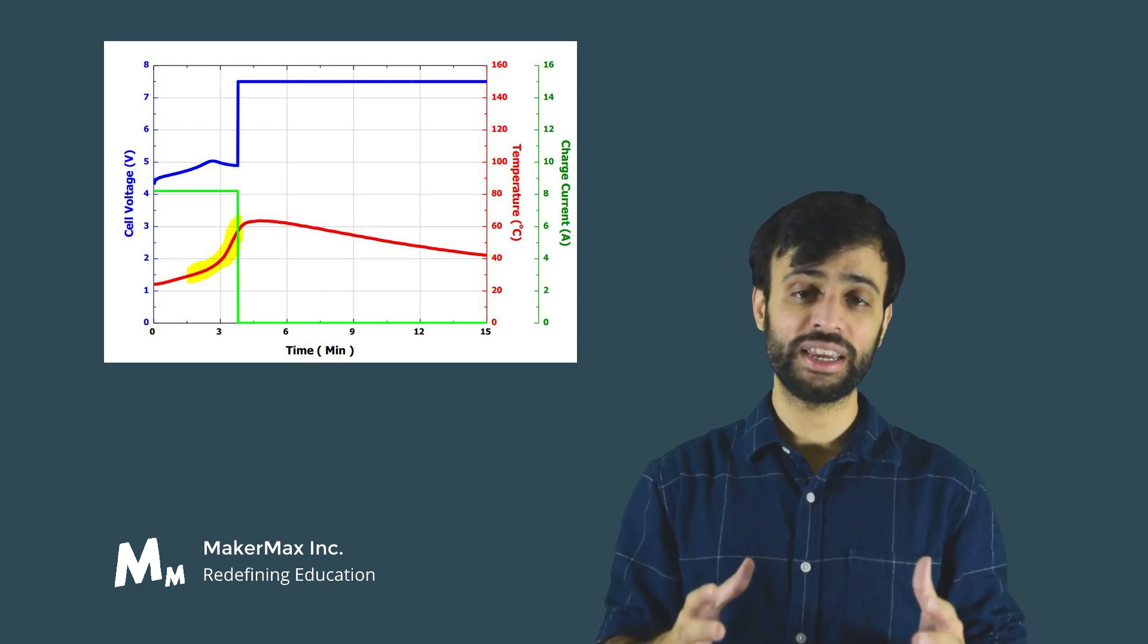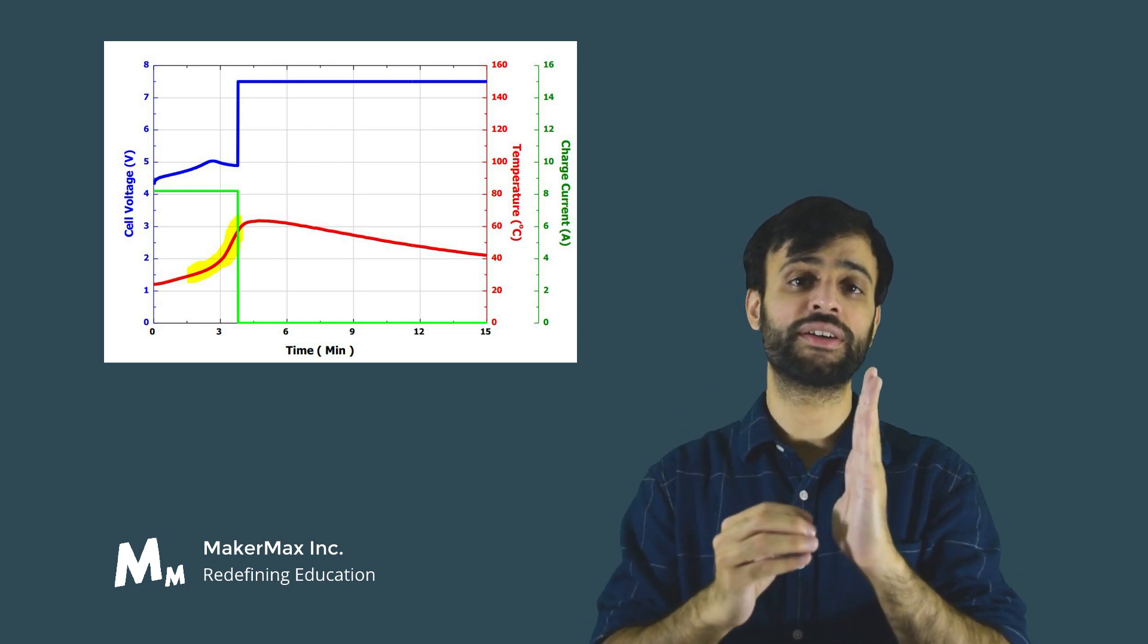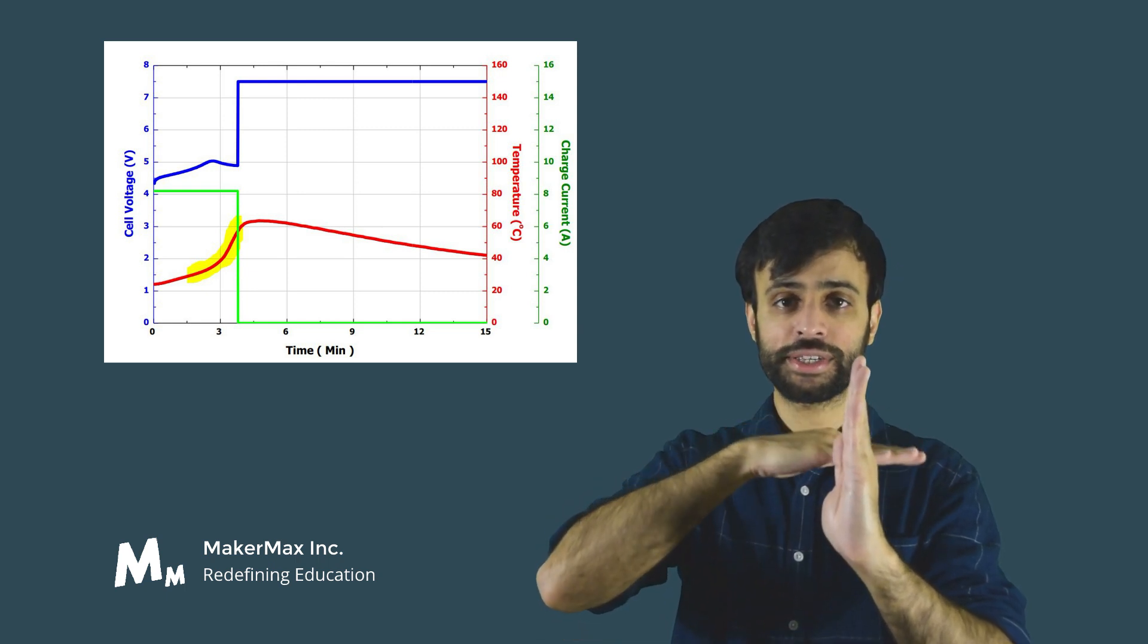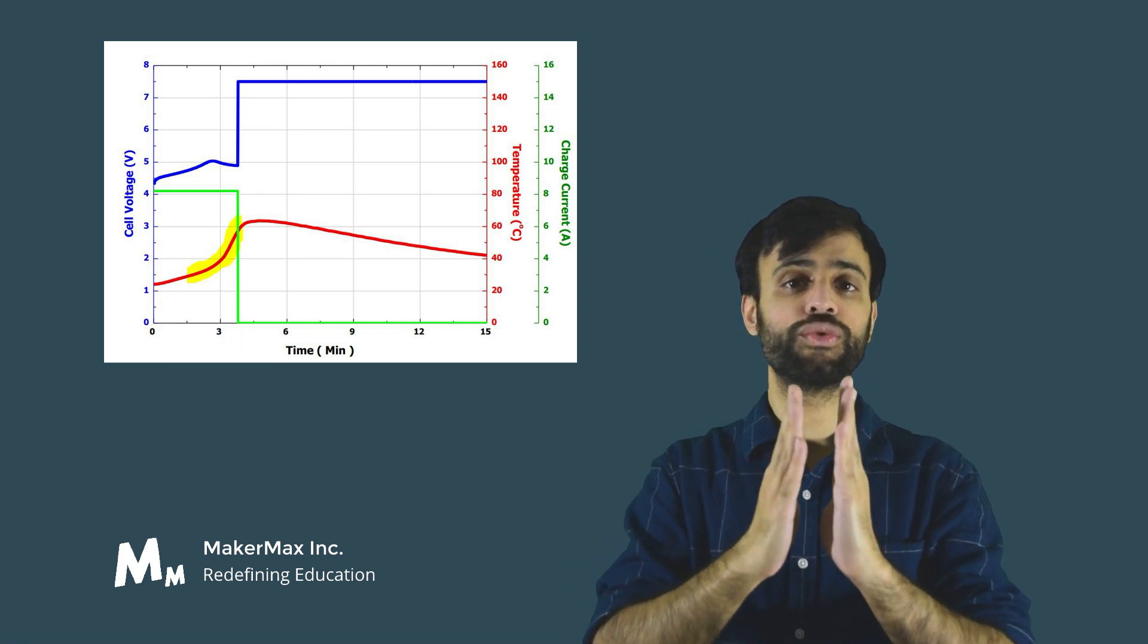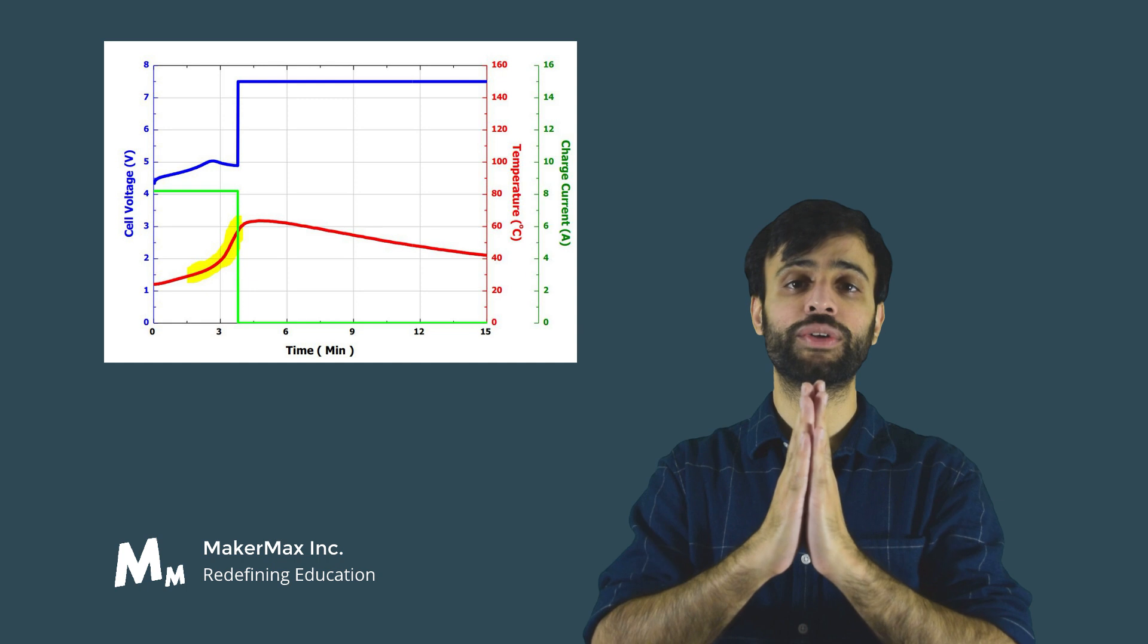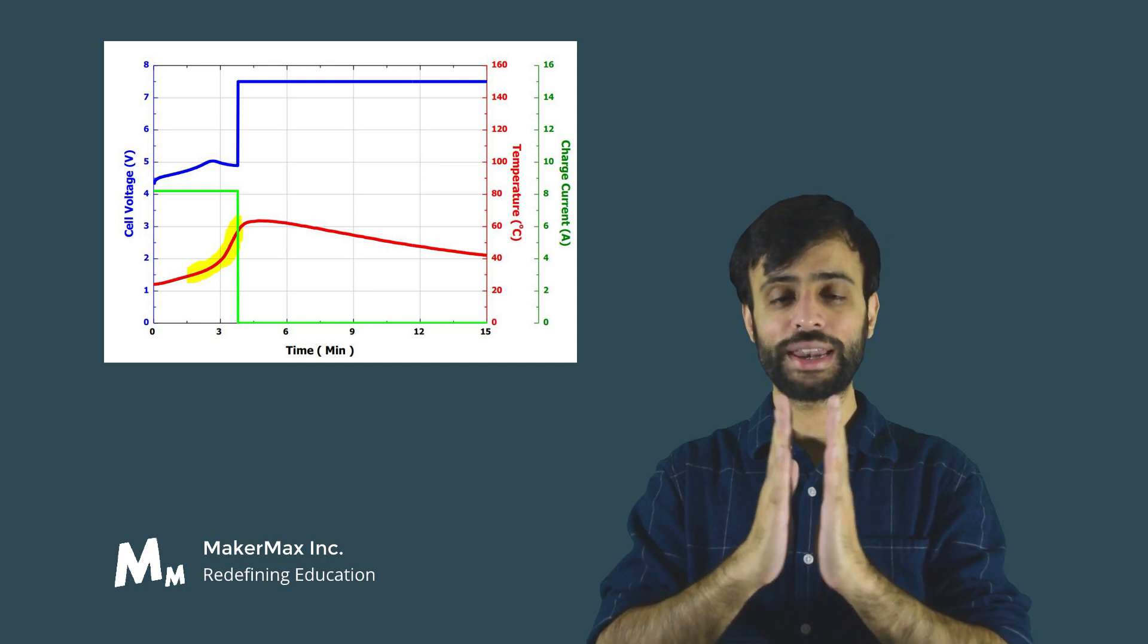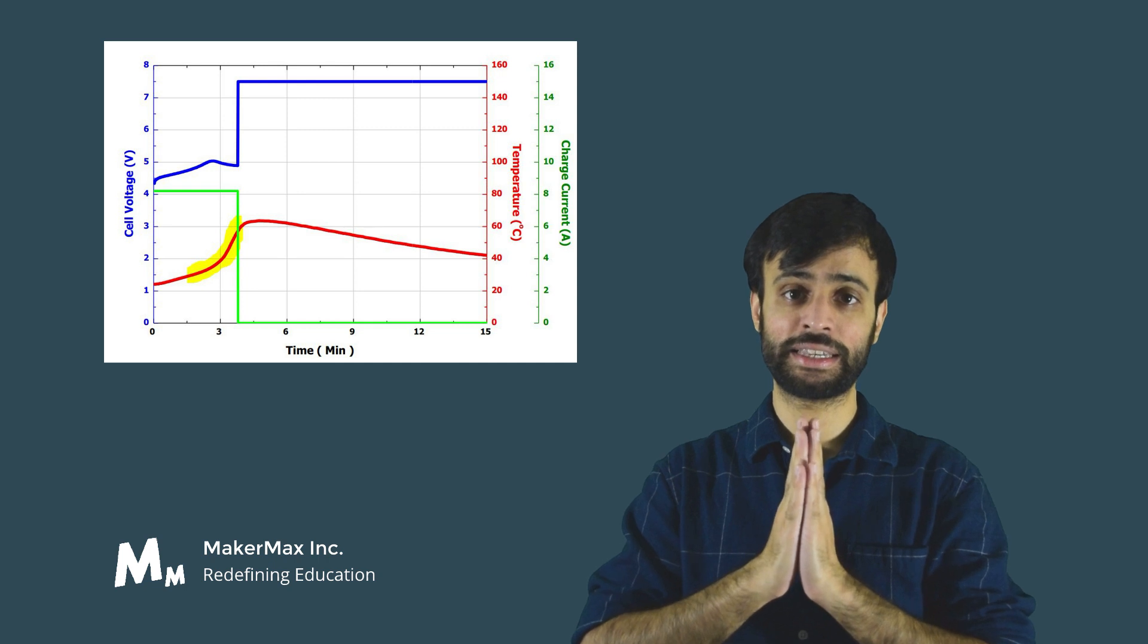This will cause stage two of thermal runaway. In stage two, there are further chemical reactions catalyzed that wouldn't have happened in stage one. Because the temperature has crossed the stage one threshold and reached stage two, the stage two reactions start to catalyze and happen, generating even more heat and rising the pressure inside the cell, creating a high temperature, high pressure environment.